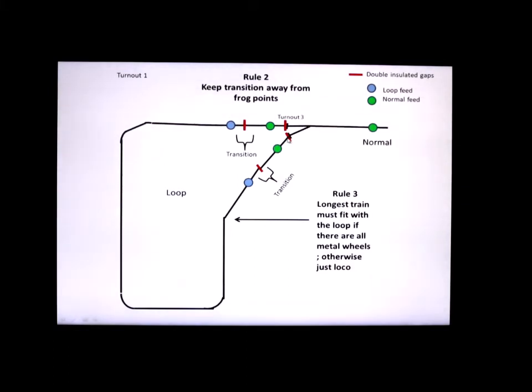The green dots represent the power coming from the normal side of the layout and the blue dots represent the feed coming from the output of the auto reverser. So you can see here that the transition occurs away from the frog points at this double insulated gap between the power from the normal feed and the loop feed. Same here. Transition is here about a foot away. These double insulated gaps are about a foot away, which is not that critical. But at any rate, whatever direction they're going in, the transition occurs here away from the frog points and it works pretty well.